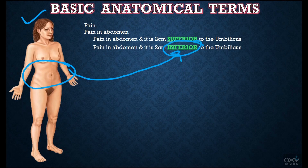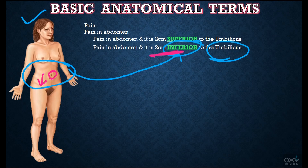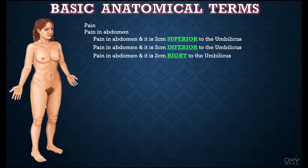Similarly, if she says 'I have pain in the abdominal region and it is two centimeters inferior or below the umbilicus or navel,' it means from the navel or umbilicus we have to go in this direction. If she is telling about two centimeters inferior to the umbilicus, then it is that point where she is getting pain.